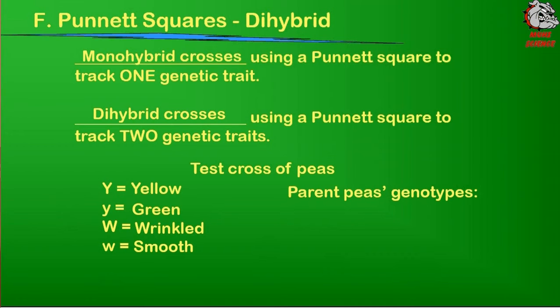Both of our parents are going to be heterozygous for both of these traits, so that means our two parent plants are going to be capital Y, lowercase y, capital W, lowercase w.